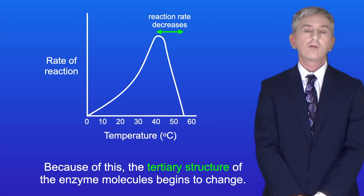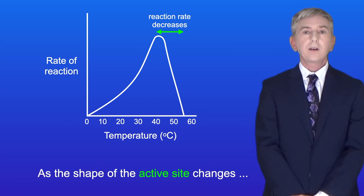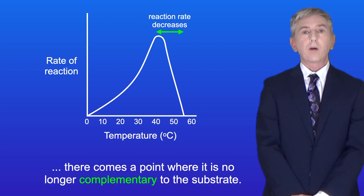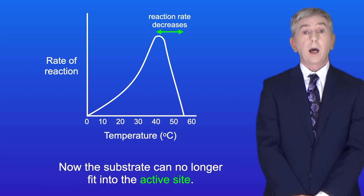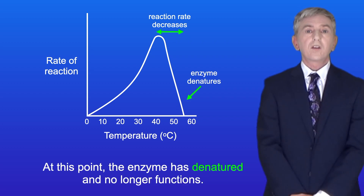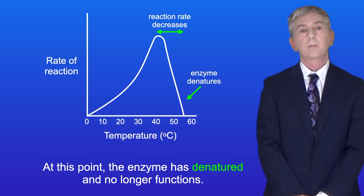Because of this, the tertiary structure of the enzyme molecules begins to change. As the shape of the active site changes, there comes a point where it's no longer complementary to the substrate. Now the substrate can no longer fit into the active site. At this point, the enzyme has denatured and no longer functions.